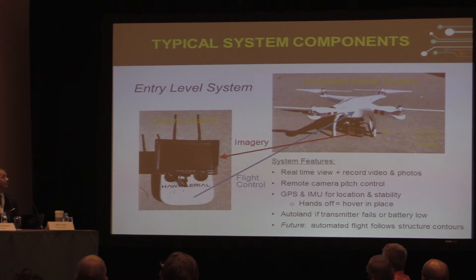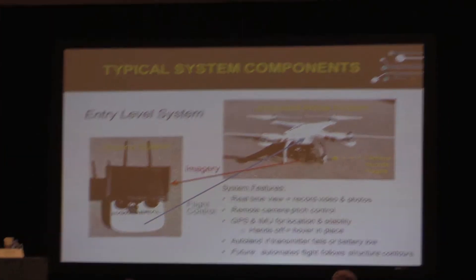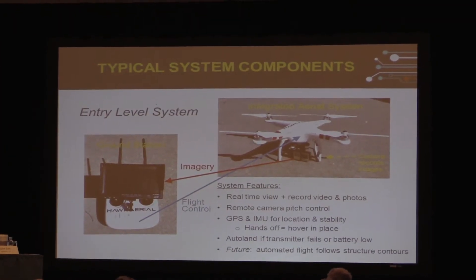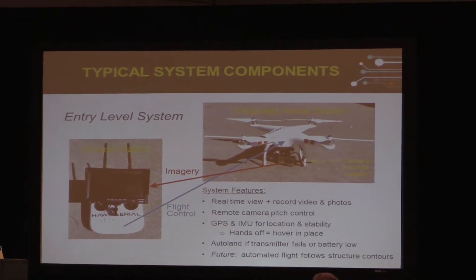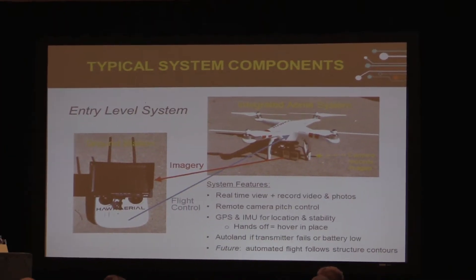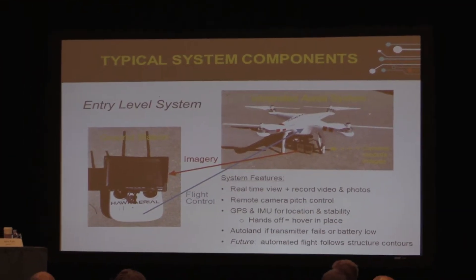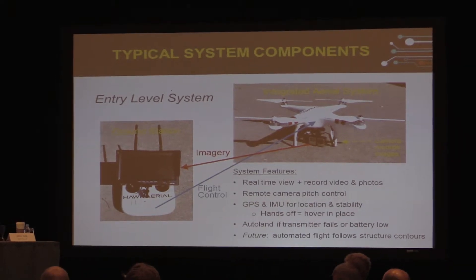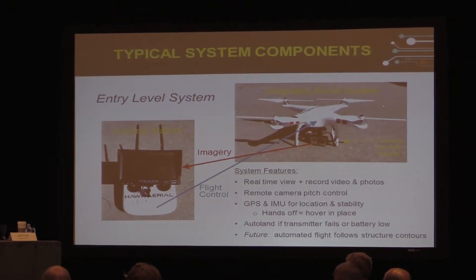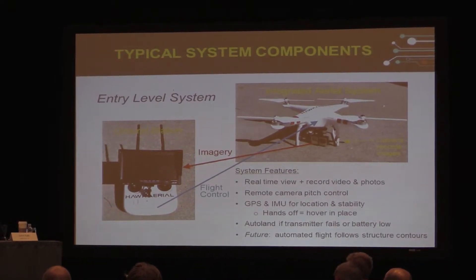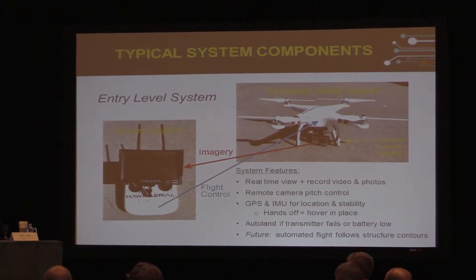If the transmitter goes or for some reason fails, or the battery gets low, the drone will automatically land itself. So in those types of failure modes, it takes care of itself.